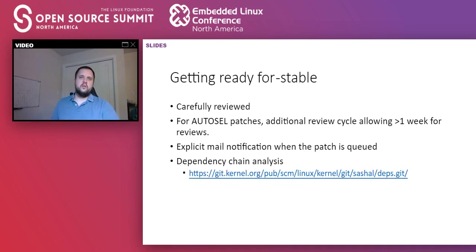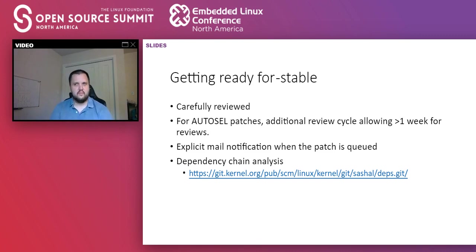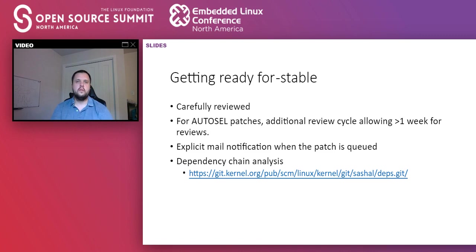Now that the patch is in Linus's tree, this is where the real work starts for us. For every patch we consider for stable, it's carefully reviewed by one of the stable maintainers — we look at every patch manually, no bots, and make sure the right thing is being done and the patch is appropriate for stable. For patches that went through the AutoCell process where the neural network suggested relevance for stable, we kick them off for another round of review, allowing at least another week for folks to object and comment.